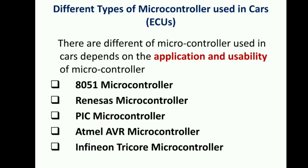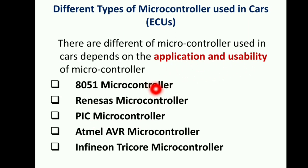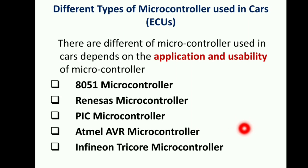This video has been made to keep things short and crispy. We have the broad top five microcontrollers used in today's cars. These microcontrollers are classified depending on the application and usability. We have: the 8051 microcontroller, Renesas, then PIC microcontroller, Atmel AVR microcontroller, and Infineon Tricore microcontroller. Most of you may have seen the Infineon Tricore — it is definitely in most of the ECUs.